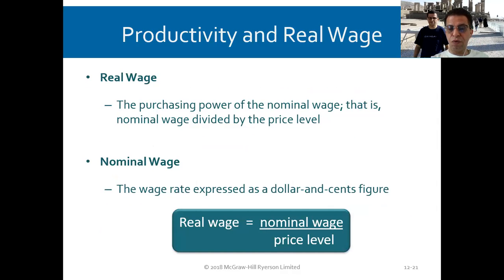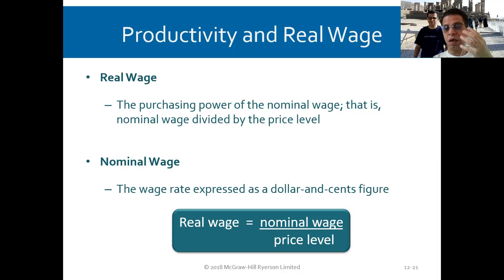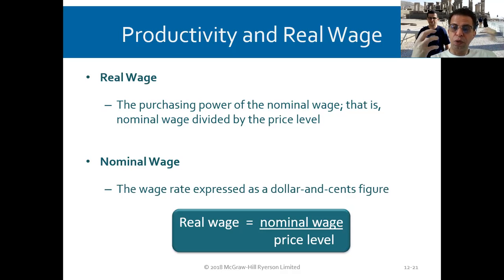Regarding productivity and the real wage: the real wage is the purchasing power of the nominal wage — that is, the nominal wage divided by the price level. The nominal wage is the wage rate expressed as a dollar and cents figure. For example, somebody who makes $1,000 in India can purchase much more with it than somebody who makes $1,000 in Canada. That's what we call the real wage.